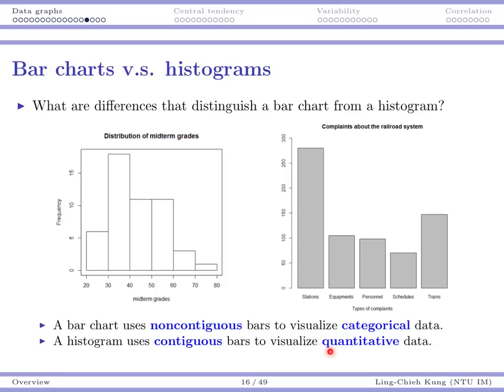When we deal with quantitative data — like the 50-meter run grades from our first lecture — we should use contiguous bars to highlight the class intervals and their frequencies. So when you have categorical or qualitative data, use a bar chart; otherwise use a histogram. Visually, there should be no gaps in a histogram, but there should be gaps in a bar chart.